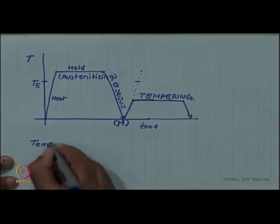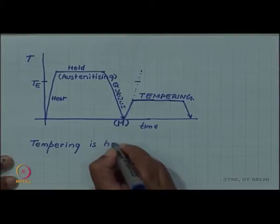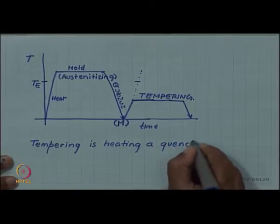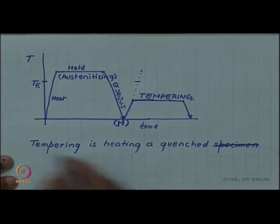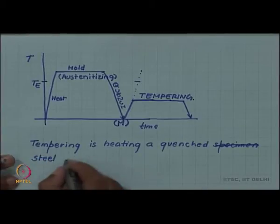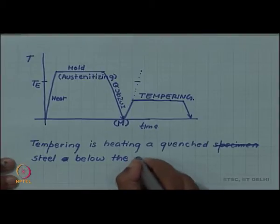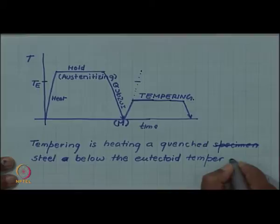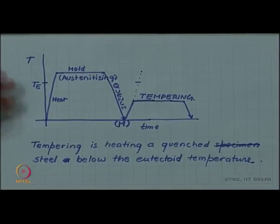We can say tempering is heating a quenched steel below the eutectoid temperature. But what this heating achieves?